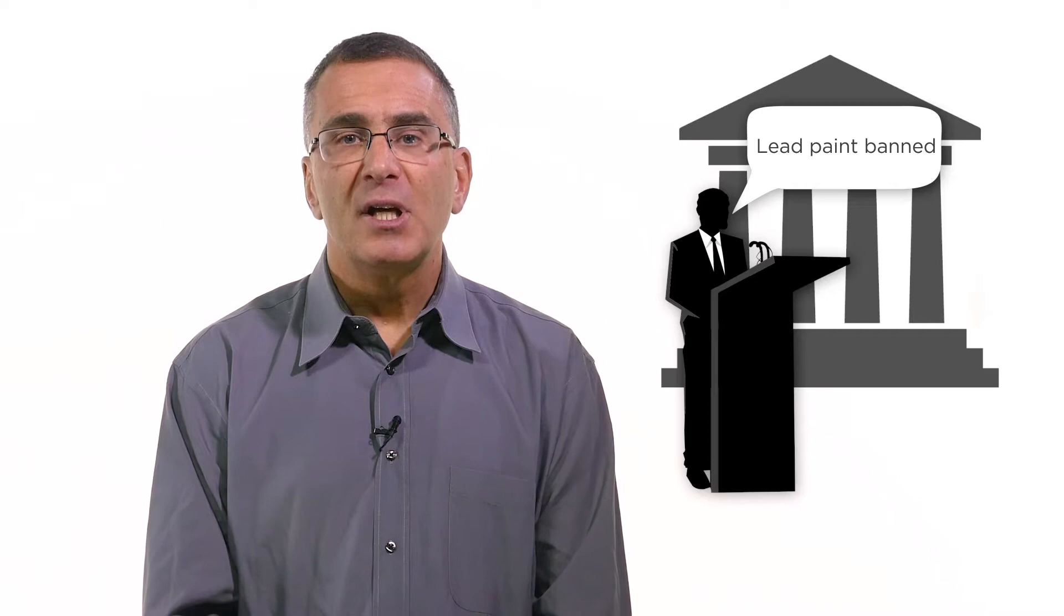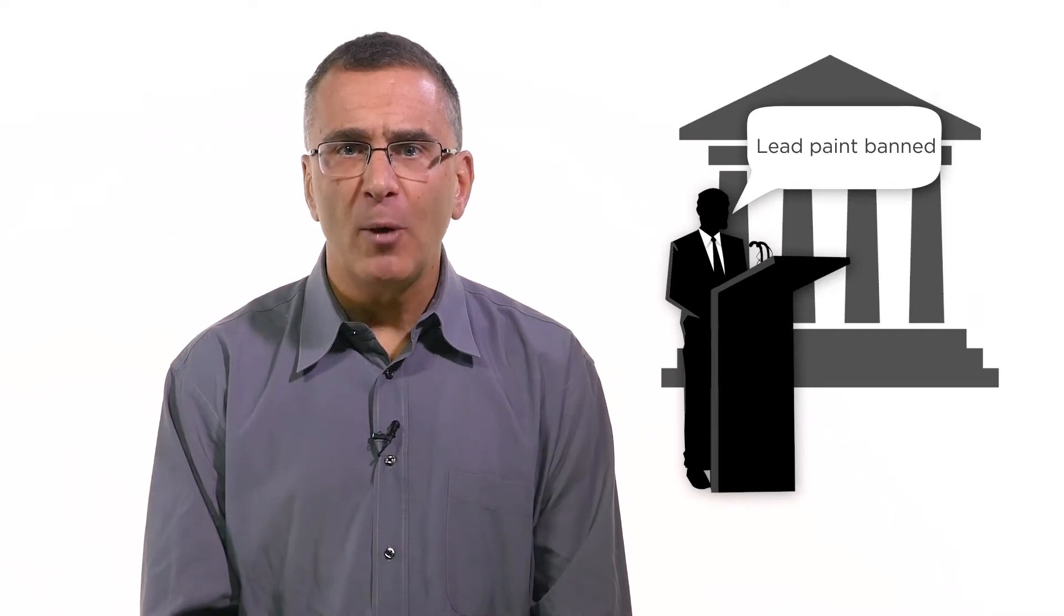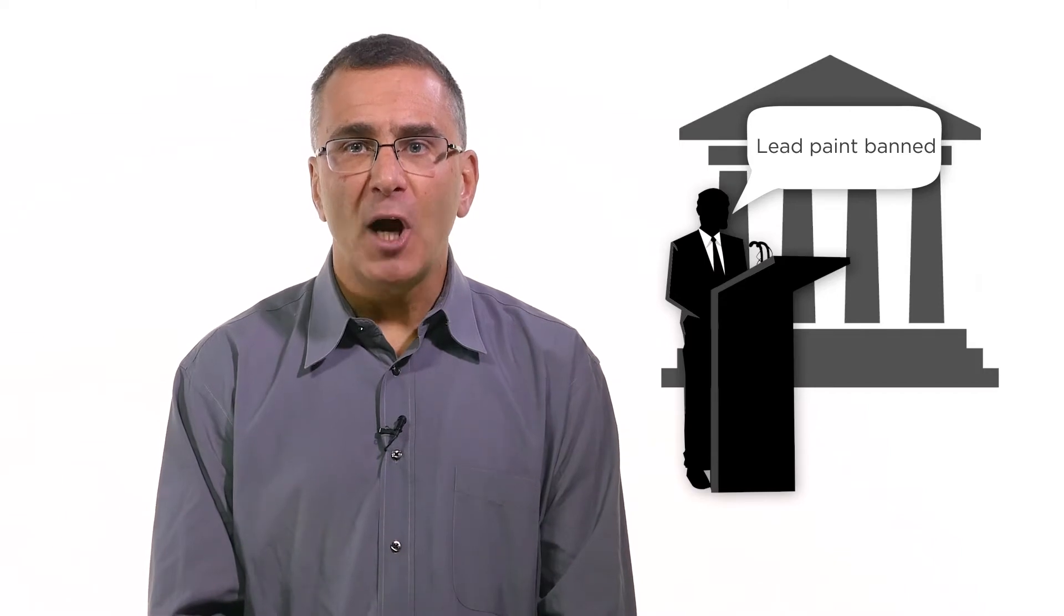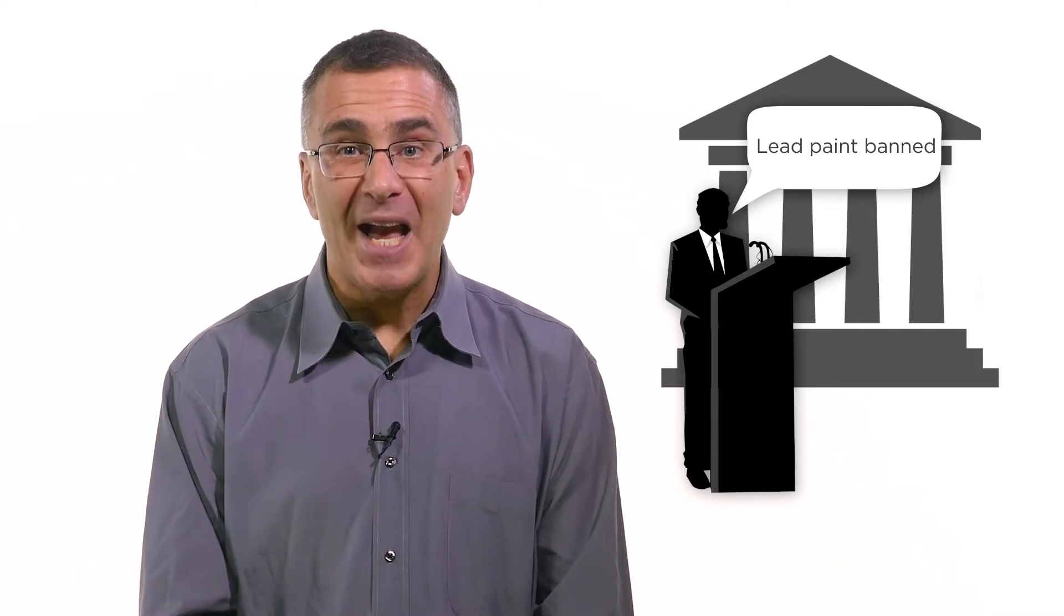So the U.S. government banned lead in paint in 1977. The externality of damaging the development of children was too consequential to simply tax. The government felt it had to regulate by banning lead paint altogether.